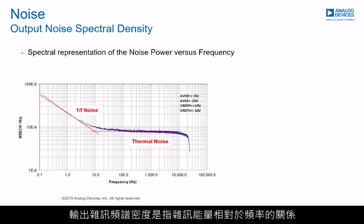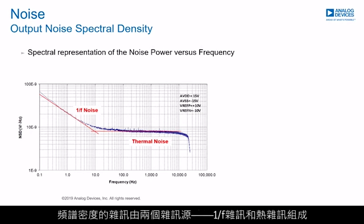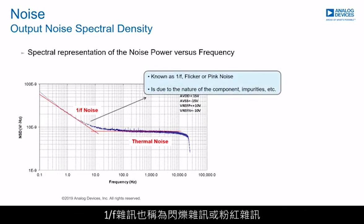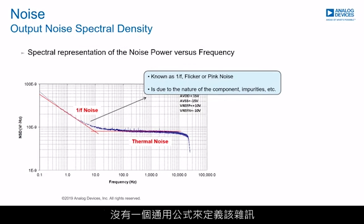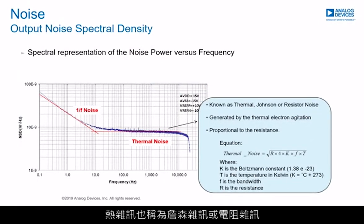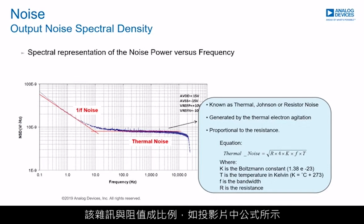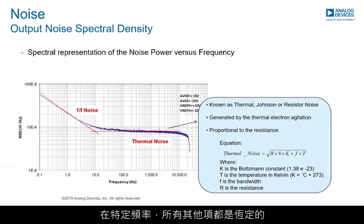The output noise spectral density is the noise energy with respect to frequency. It is made up of two noise sources: 1/f noise and thermal noise. 1/f noise is also known as flicker noise or pink noise — it is due to the nature of the components and impurities of the process, and there is no general equation to define it. Thermal noise, also known as Johnson noise or resistor noise, is generated by thermal electron agitation and is proportional to resistance, as outlined by the equation on this slide.